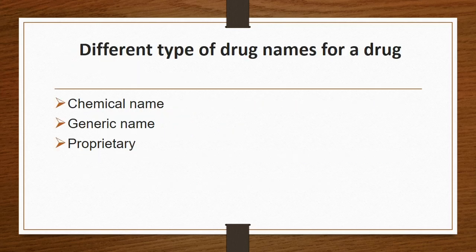What are the different types of drug names? There would be a chemical name, a generic name, and a proprietary name.